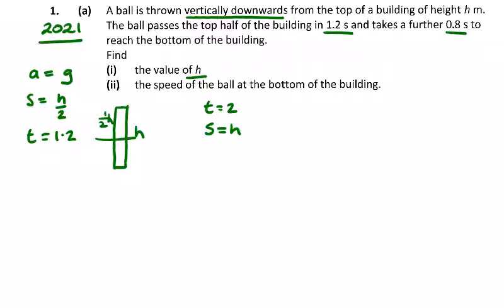So let's see what we have here. We have a, s, and t. So if we use s equals ut plus half at squared, we should be able to form two equations.